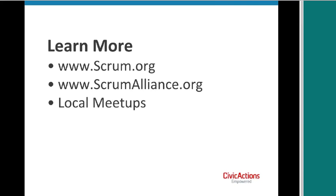Scrum.org and ScrumAlliance.org are both places to find books, articles, primers, and local meetups. All over the country you're going to find people who are doing Agile, and just going and meeting with them and talking about what they're doing has been very, very useful. I'd like to open it up for questions.